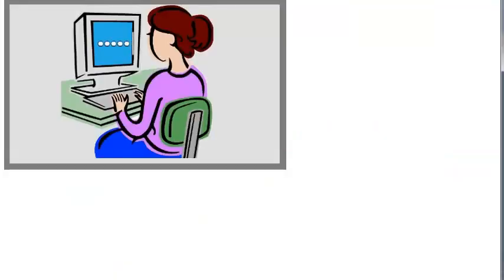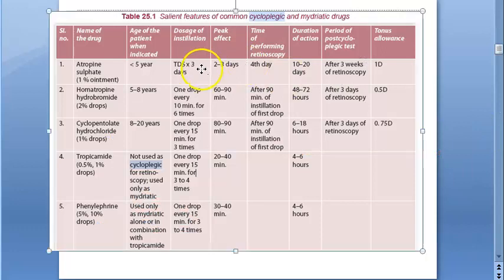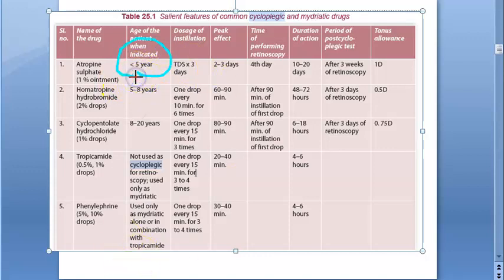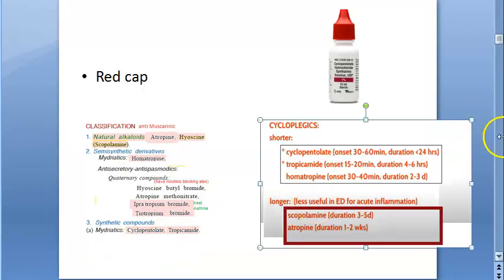To recap: cycloplegics cause cycloplegia, which stops accommodation, to reduce pain and relieve muscle spasm. Looking at the salient features: cyclopentolate one percent, homatropine two percent, atropine one percent. Atropine is long-acting, given as ointment, and given only when the patient is less than five years old. Cyclopentolate is used for ages eight to twenty years, homatropine for five to eight years. Atropine is not given to adult males because it can cause urine retention, and it can worsen glaucoma as a mydriatic.